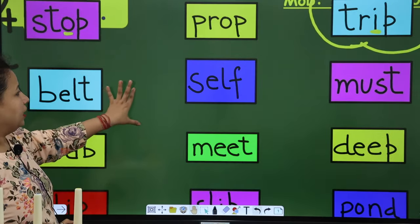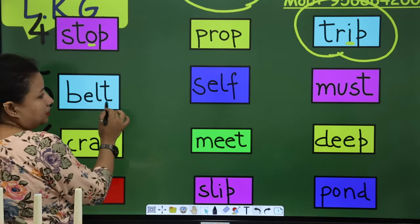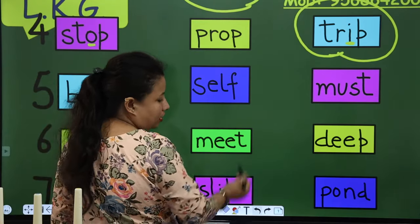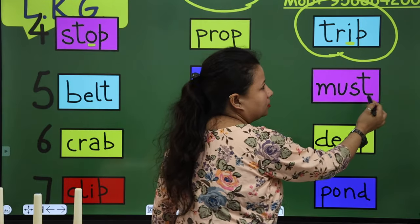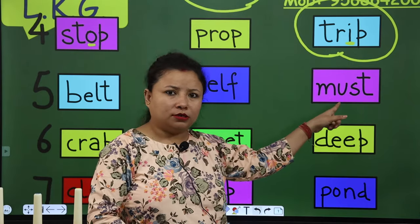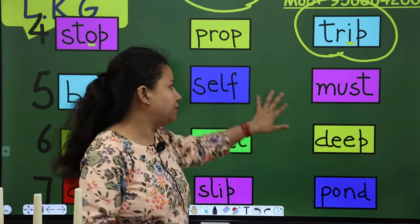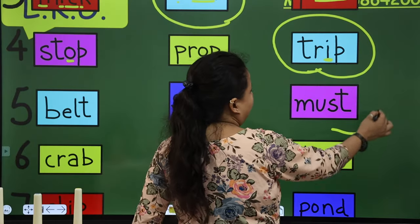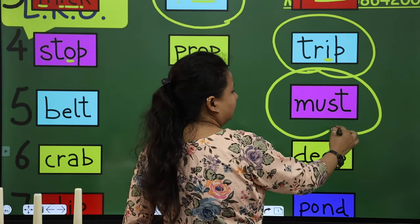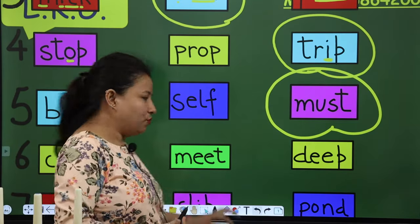Now next is belt. Belt, self. And this is must. So belt, self and must. Must is different, or not? Must is different. So now we have to make a circle. It is very easy. It is very easy for you.